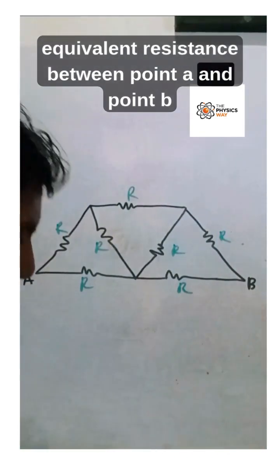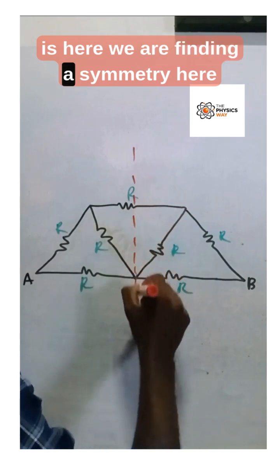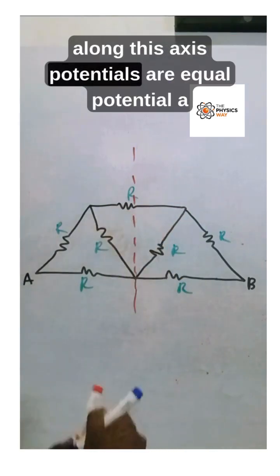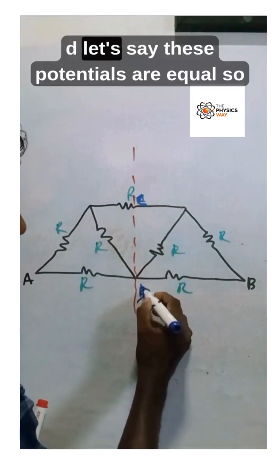To find the equivalent resistance between point A and point B, we're identifying symmetry here. Along this axis, potentials are equal: potential A and potential B, potential C and potential D. These potentials are equal.